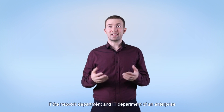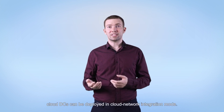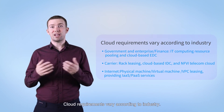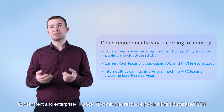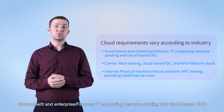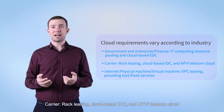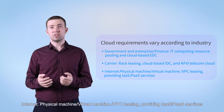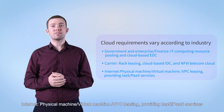If the network department and IT department of an enterprise are combined and possess certain technical skills, cloud DCs can be deployed in cloud network integration mode. Cloud requirements vary according to industry. Government and enterprise finance: IT computing resource pooling and cloud-based EDC. Carrier: rack leasing, cloud-based IDC, and NFVI telecom cloud. Internet: physical machine, virtual machine, VPC leasing, providing IaaS and PaaS services.